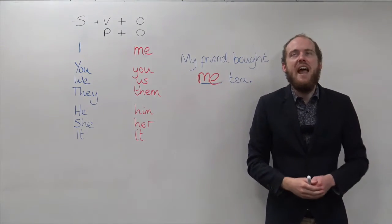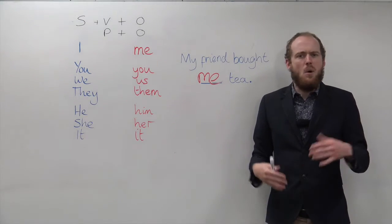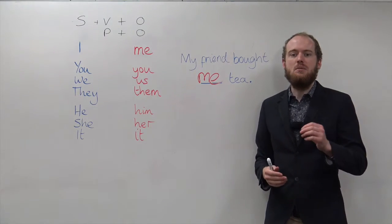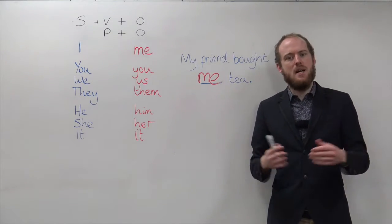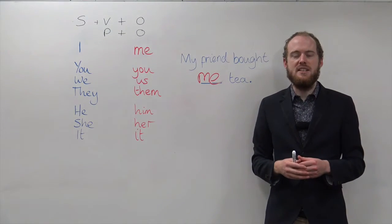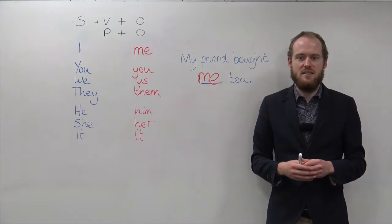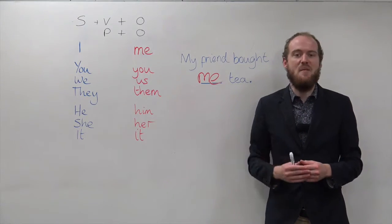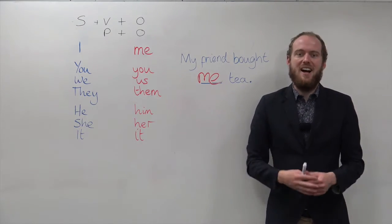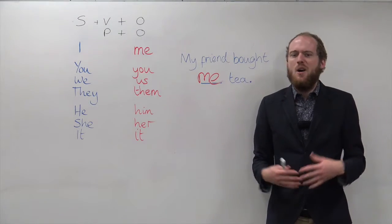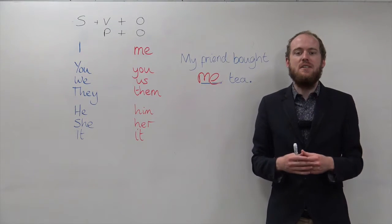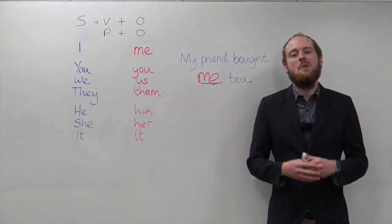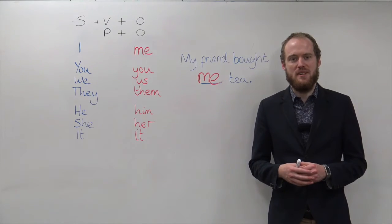If there is ever a doubt about which pronoun to use, use the word 'for.' For example: 'this is for me, for you, for him, for them, for us,' etc. Whatever comes after 'for' is an object pronoun. We hope you enjoyed this lesson on object pronouns.